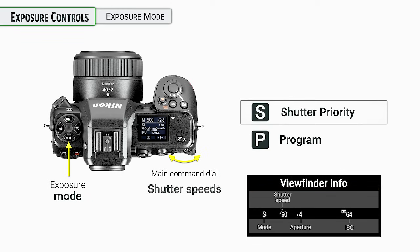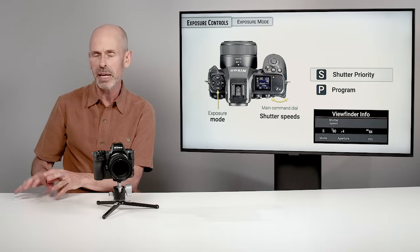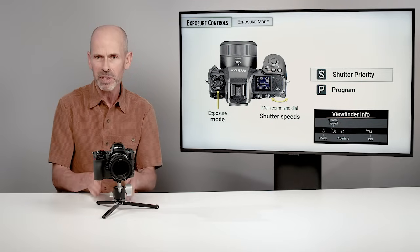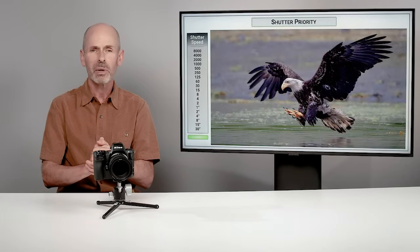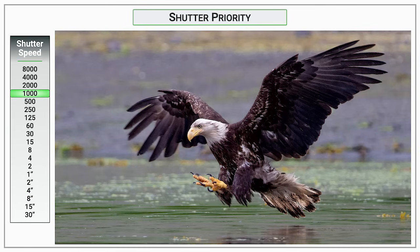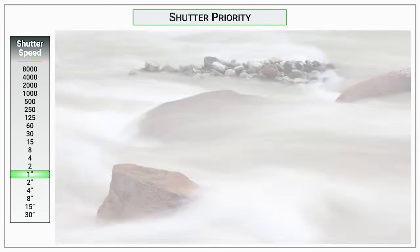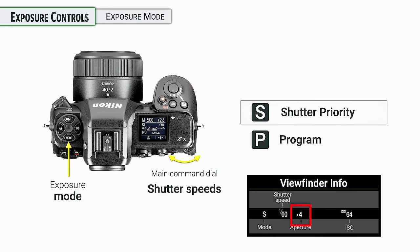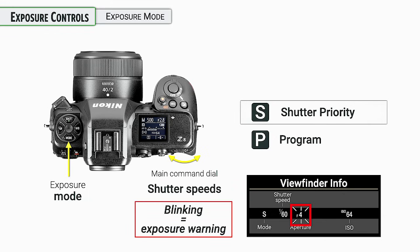Next is shutter priority — you select the shutter speed and the camera figures out the aperture. ISO is still a separate issue. If you want to capture something moving quickly, like an eagle, you might need 1/1000th of a second or faster. To blur a river you might use one second or longer. There are many good reasons to be very particular about your chosen shutter speed.